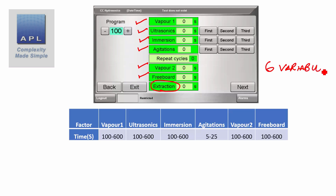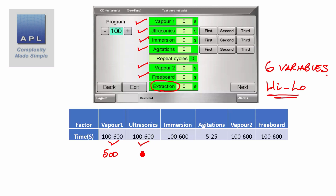Now with these six variables, in order to design an experiment we have to decide what the low value and high value of each test will be — the highs and the lows. You can see on the table at the bottom that they give us that information. The first variable, vapor one, has between 1 and 600, so 500 choices. Ultrasonics also has 500 choices, same with immersion, then 20 choices on agitation, 500 choices on vapor 2, and 500 choices on freeboard.